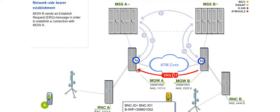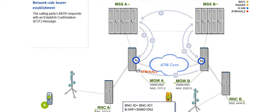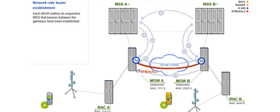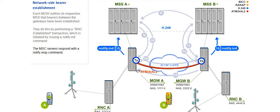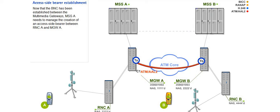MGWB sends an established request, or ERQ, message in order to establish a connection with MGWA. The message is sent using the ATM AAL2 signaling protocol. The calling party's MGW responds with an established confirmation message, also known as an ECF. The ECF message confirms that the user plane has been established between the gateways. Each MGW notifies its respective MSS that bearers between the gateways have been established by performing a BNC established transaction, which is initiated by issuing a notify indicator command. The MSC servers respond with a notify response command.